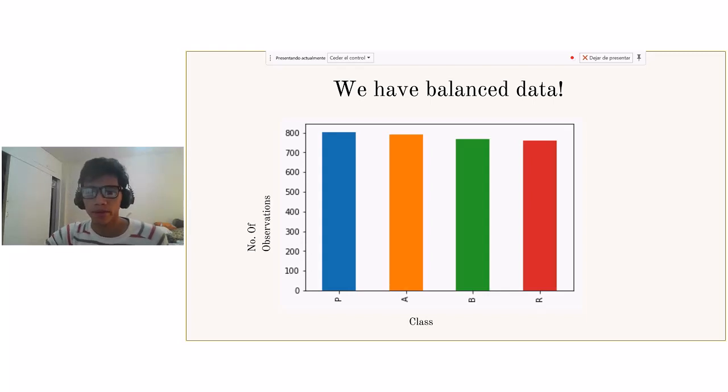Doing a very brief exploration, we can see that all the classes are balanced in the sense that we have almost the same number of observations for each class, which is great.